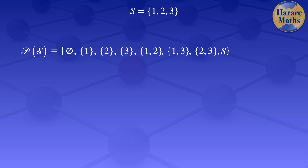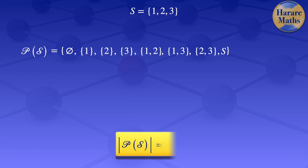We can also find the cardinality of the power set of S using another formula. We know that the cardinality of the power set of S is equal to 2 to the power of the cardinality of the set S. In this case our S has 3 elements, therefore the cardinality of S is 3.